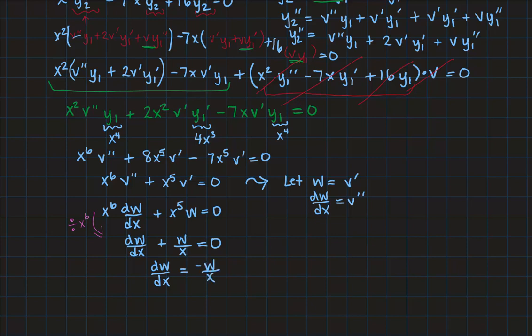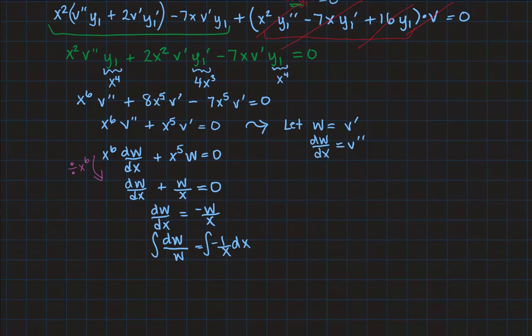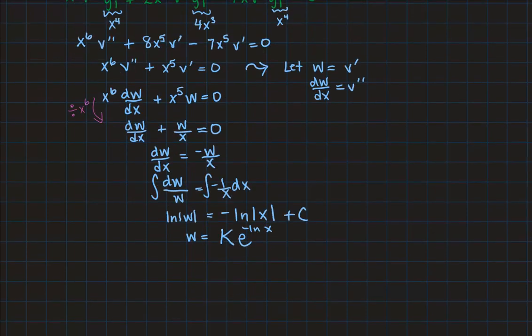So we get dw dx equals negative w over x. Now I'm going to separate variables. dw over w, we'll leave the negative sign on the other side, equals negative 1 over x dx. And then I integrate. So I get that the natural logarithm of absolute w, remember when you do you always should get log absolute w on the left of this step, equals the negative logarithm of absolute x, or plus c. So w is some k e to the negative log of x, if you will, if we allow ourselves to go across any interval.